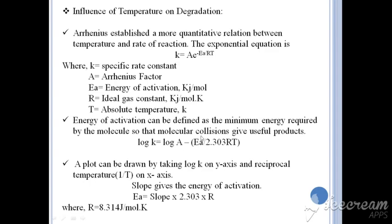In order to calculate energy of activation, the equation log k = log A − (Ea / 2.303RT) can be used. We will determine the value of energy of activation using the graphical method. We will plot log k on the y-axis and 1/T on the x-axis. This graph yields a slope value. To calculate energy of activation, we multiply the slope of the graph by 2.303 multiplied by R, where R is 8.314 joules per mole per kelvin.